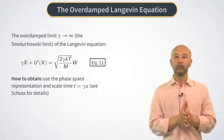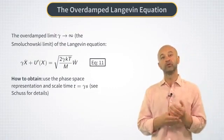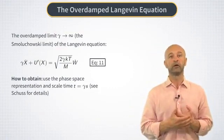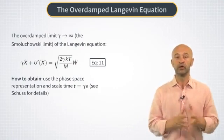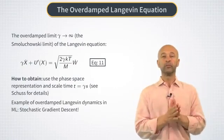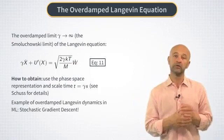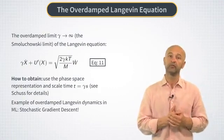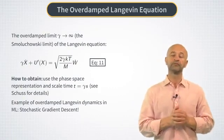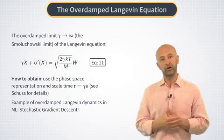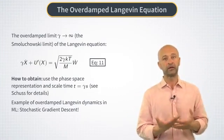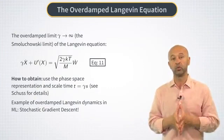In fact, the overdamped version of the Langevin equation is probably used more often than its full version, at least outside of physics. For example, remember our discussion of stochastic gradient descent method for training machine learning algorithms. In fact, minimization of the loss function there can exactly be described as a Langevin equation.